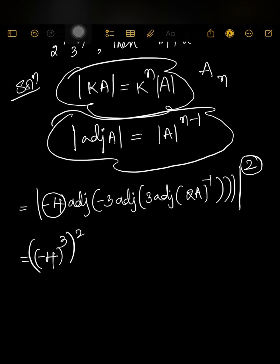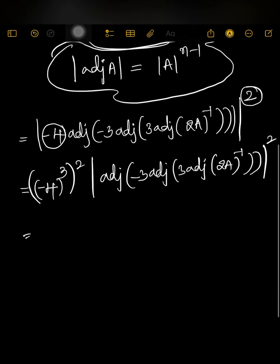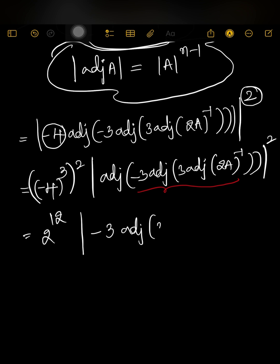So det(kA) = (-4)^3 whole squared, with the adjoint of (-3·adj(3·adj(2A)^(-1))) remaining. That (-4)^3 whole squared simplifies to 4^6, which is 2^12. Now this inner part is again in the form of det(adj A), so we write det of (-3·adj(3·adj(2A)^(-1))) whole squared.